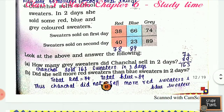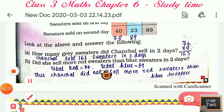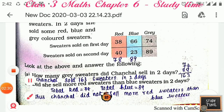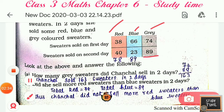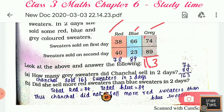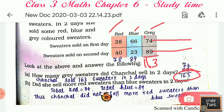For the sweaters sold on the first day and second day — red, blue, and gray — you first have to add them together, giving 163. How many gray sweaters did Chanchal sell in two days? Gray sweaters: 74 and 89, the answer is 163. Did she sell more red sweaters than blue sweaters in two days? Total red is 78, total blue is 89. Thus Chanchal did not sell more red sweaters — blue sweaters are more.